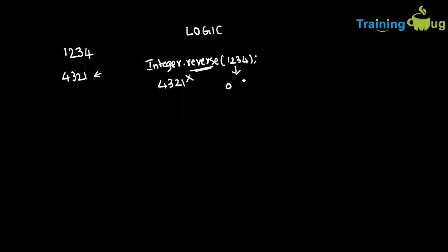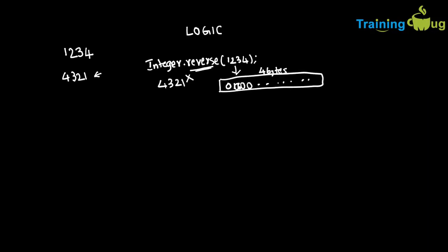We know that every integer number occupies 4 bytes of memory. So you have a sequence of 0s and 1s — 1234 will be converted into 0s and 1s in 4 bytes. What the reverse method does is it reverses that byte sequence. The 2's complement will reverse this whole byte sequence, and whatever value results will come back as a different value — not 4321. That's the reason you should never use this reverse method to print the reverse of a particular number.